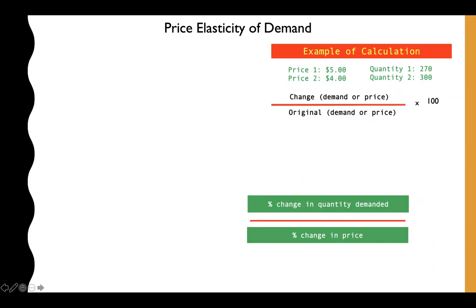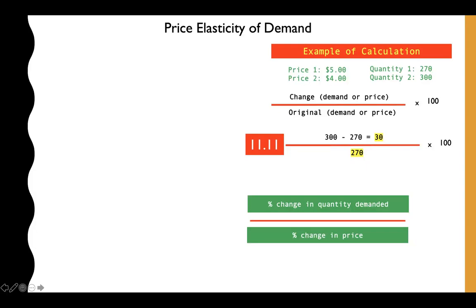We need to convert both changes into percentages first. For quantity: the new quantity is 300 minus the original 270, giving a change of 30 units. Dividing 30 by the original 270 gives 11.11%.